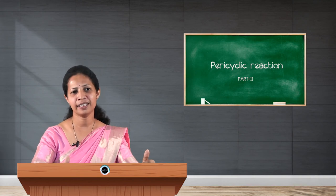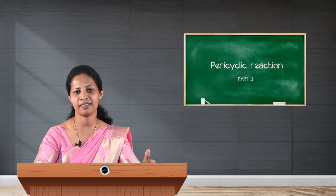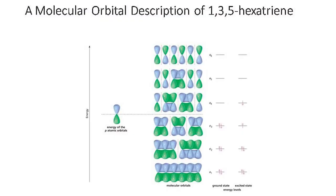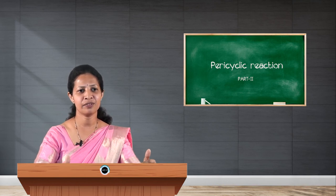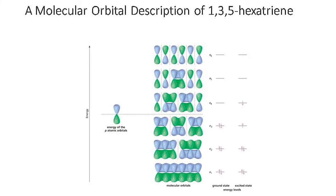We will now identify the frontier molecular orbitals of 1,3,5-hexatriene in the ground state and excited state. In the ground state there are 6 pi electrons, all occupied in psi 1, psi 2, and psi 3. Therefore psi 3 is HOMO and psi 4 is LUMO; psi 3 and psi 4 are the ground state frontier molecular orbitals. In the excited state, one electron gets excited from psi 3 to psi 4, making psi 4 the HOMO and psi 5 the LUMO. Psi 4 and psi 5 are the excited state frontier molecular orbitals.